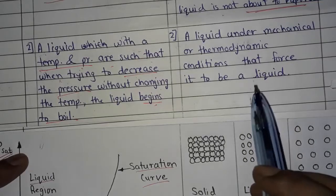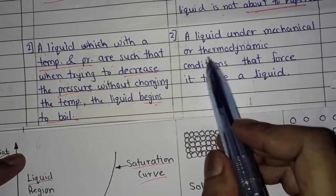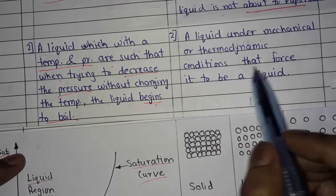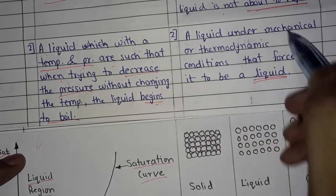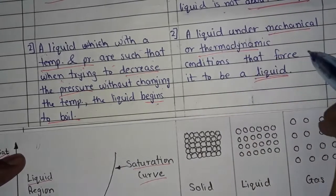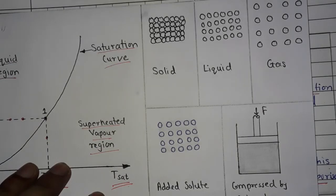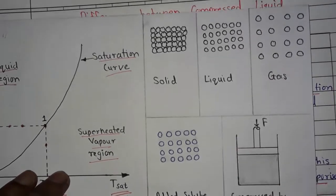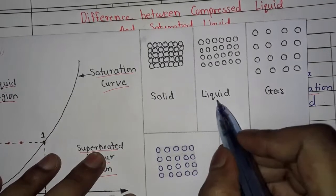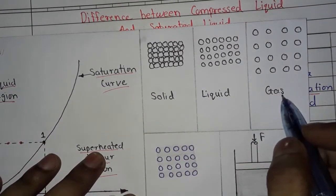In compressed liquid, the liquid is under mechanical or thermodynamic conditions that force it to remain liquid — we will see this in detail in the third point. As we know, a liquid is a phase of matter containing molecules with intermolecular spaces larger than solids and smaller than gases, which gives liquids the ability to flow.